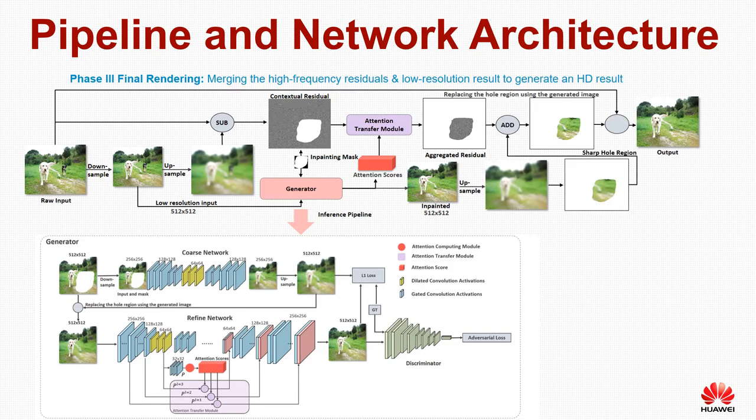In phase 3, we assemble the low-resolution inpainting result to obtain a high-resolution blurry result. We then add the aggregated residues to the blurry result to get a sharp result.